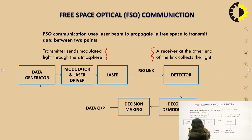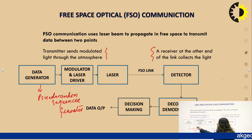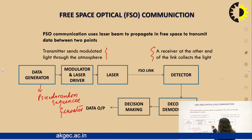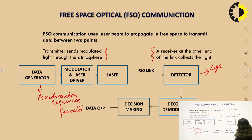We have a data generator which is a pseudo random sequence generator that generates data in a random fashion. Then we have a modulator and laser driver which modulates this data accordingly and sends it to the laser. The laser provides the message signal and the modulator or driver provides the carrier signal, which modulates the signal in the form of light and sends it through the free space optical link. The detector then converts that light into an electrical signal.